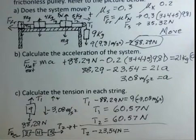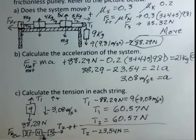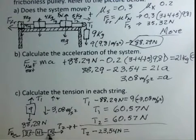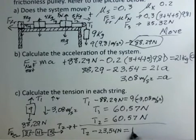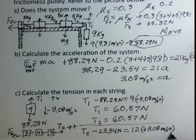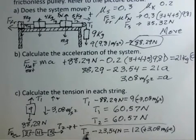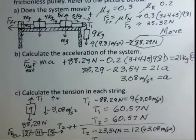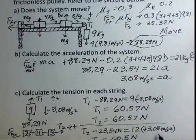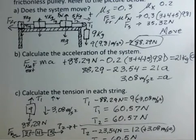Solving for T2 gives approximately 60.5 newtons — essentially the same as 60.57. The minor difference is due to rounding in the 3.08 m/s² acceleration value. Now for T3, the tension between the 5 and 4 kilogram objects, we use a subsystem of just the 3 and 4 kilogram objects.